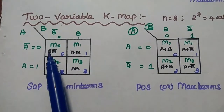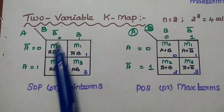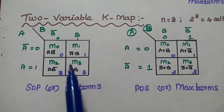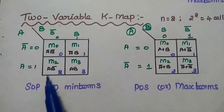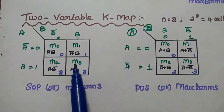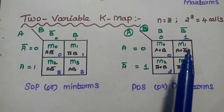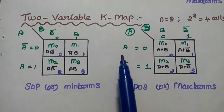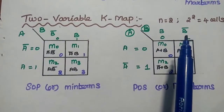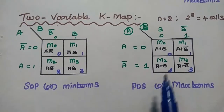Cell 0 can be represented as A-bar B-bar, cell 1 as A-bar B, cell 2 as A B-bar, and cell 3 as A B. In terms of SOP or minterms, we represent them as m0, m1, m2, m3. In terms of maxterms, they are capital M0, M1, M2, M3, but here A equals 0 means A-bar equals 1, and B equals 0 means B-bar equals 1. We use the plus term because it is product of sums.